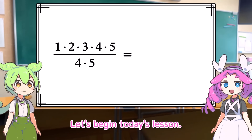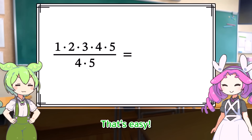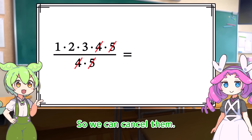Let's begin today's lesson. We'll work on simplifying fractions. That's easy. The numerator and denominator both have 4 and 5, so we can cancel them.